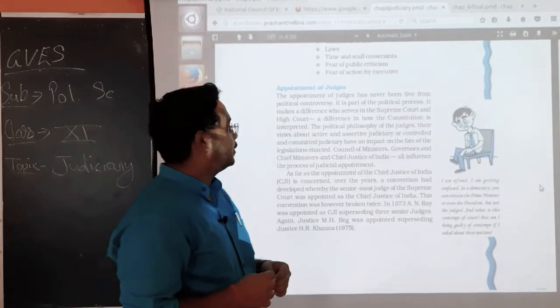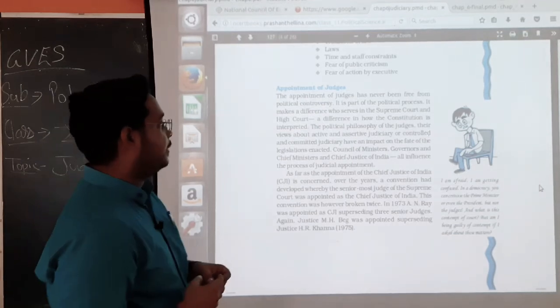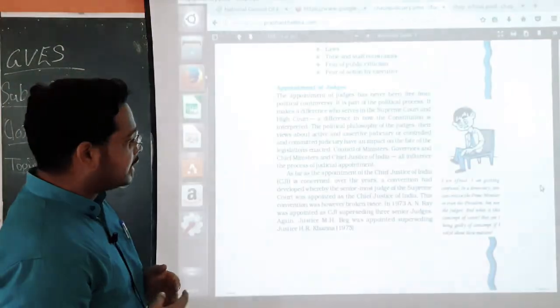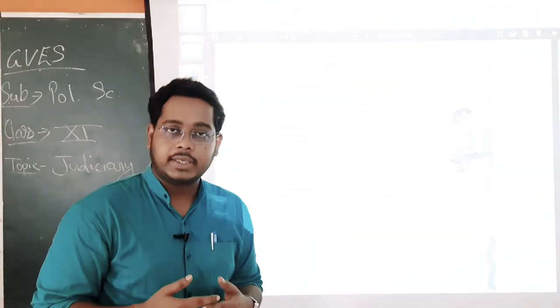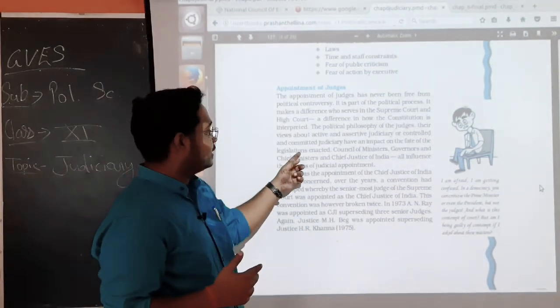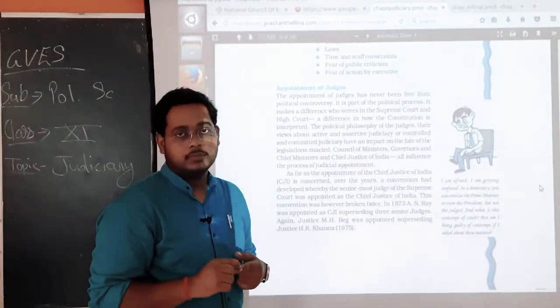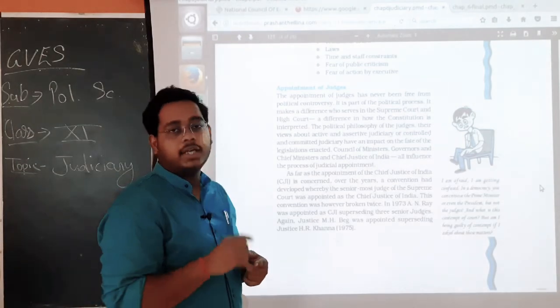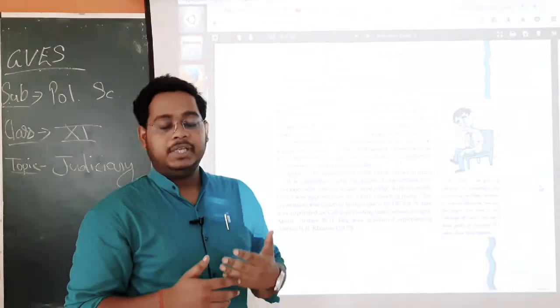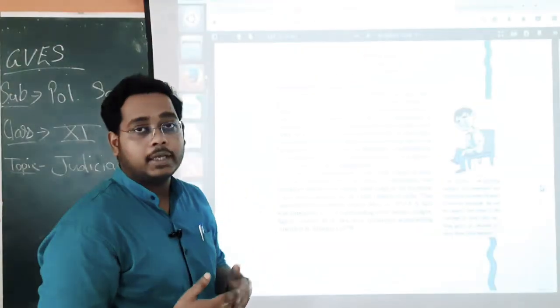So, the political philosophy of the judges, their views about the active and assertive judiciary or controlled and committed judiciary have an impact on the fate of legislation enacted. This is true that any judge has its ideology, its opinion towards the whole constitution. It has a direct impact on how many laws have been enacted, how many laws have been passed, it will not hinder it or not. They will encroach in that or not. It will not counter it or not. It depends on how the judge has its philosophy, its ideology.